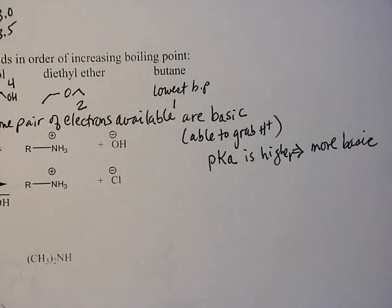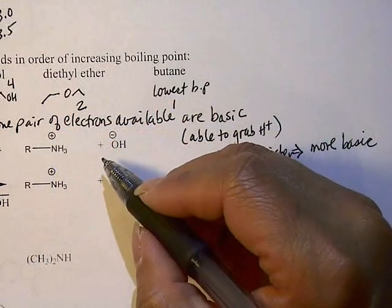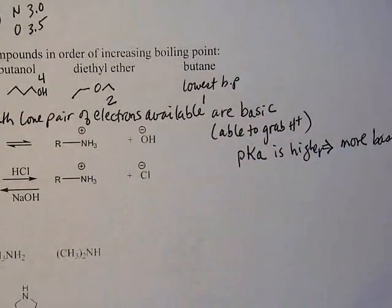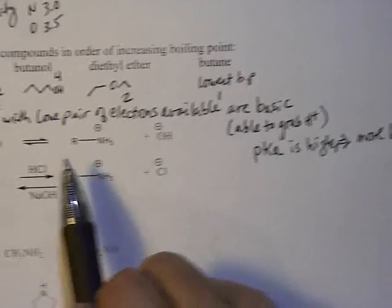All right. So what will happen is if you have an amine and if it's soluble in water, what will happen is that there will be an equilibrium process going on in which you will grab the proton of the water and form this hydroxide anion ammonium salt type of complex.